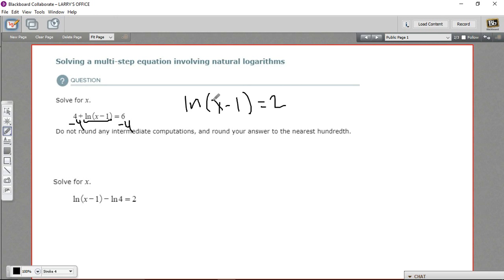Now what this says, the natural log is a base of e, I'm just going to sketch an e in here to remember that. What this says is that e to the second power will give you this expression x minus 1. So we can write that as an equation, e to the second power equals x minus 1.